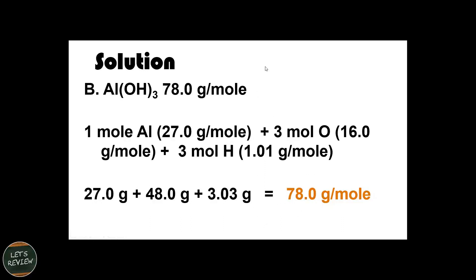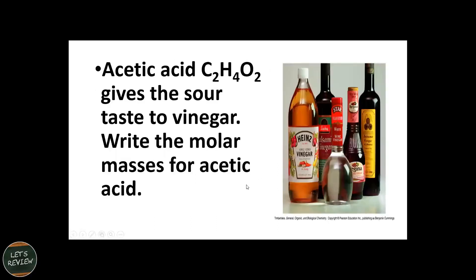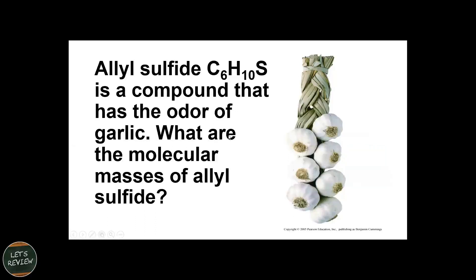I hope you learned something from our topic today. Remember that compounds we use at home have these proportions and you can calculate their molar mass. For example, acetic acid (C₂H₄O₂) gives the sour taste to vinegar — it has two carbon atoms, four hydrogen atoms, and two oxygen atoms. Another example is allyl sulfide found in garlic, with six carbon atoms, ten hydrogen atoms, and one sulfur atom. See you again on the next review, bye!